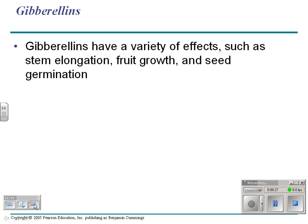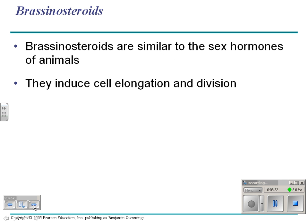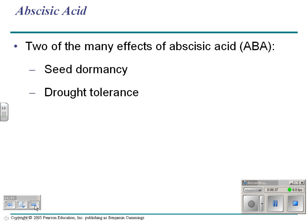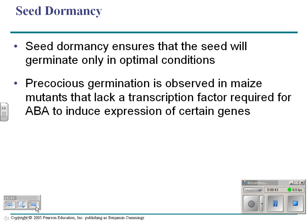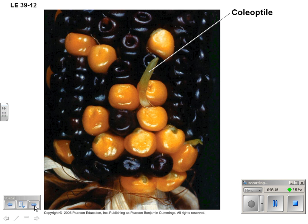There are hormones called gibberellins, which are involved in fruit growth and seed germination. Hormones called brassinosteroids induce cell division. Abscisic acid is for seed dormancy to help seeds become dormant and for drought tolerance. We're not going to spend more time on those.